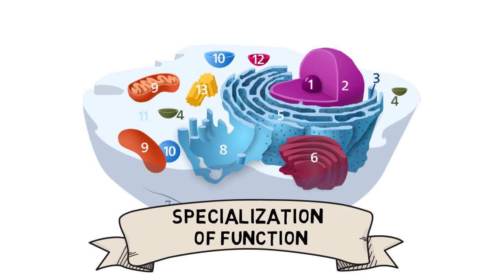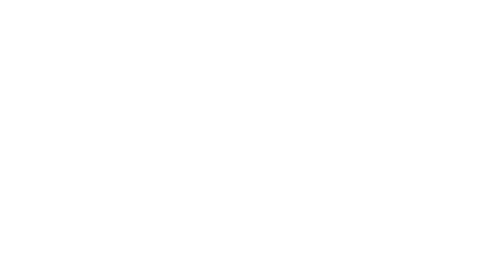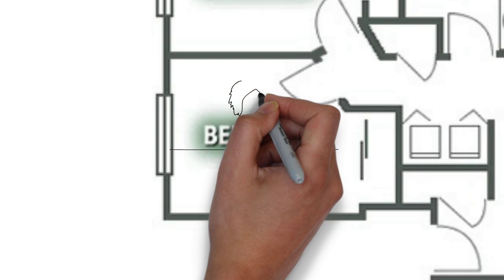In order to carry out certain functions, optimum conditions within the organelle microenvironment have to be met. Using the apartment as an analogy, if you are using your bedroom to study, you expect it to be calm and quiet, have a sturdy study table, and maybe a cushioned chair so you can study comfortably and in peace.